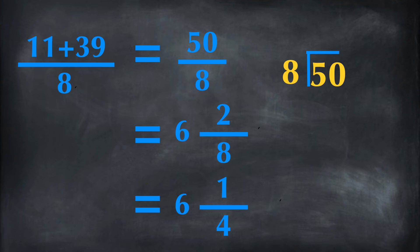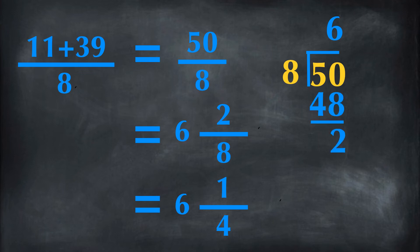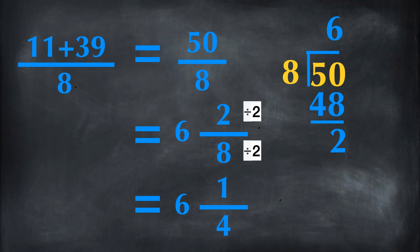11 plus 39 equals 50. 50 over 8 is an improper fraction, so we are going to change it into a mixed number. 8 goes into 50 six times. 8 times 6 equals 48. 50 minus 48 equals 2. So the whole number is 6 and the numerator is 2. 2 over 8 can be simplified by dividing by 2. The final answer is 6 and 1 fourth.